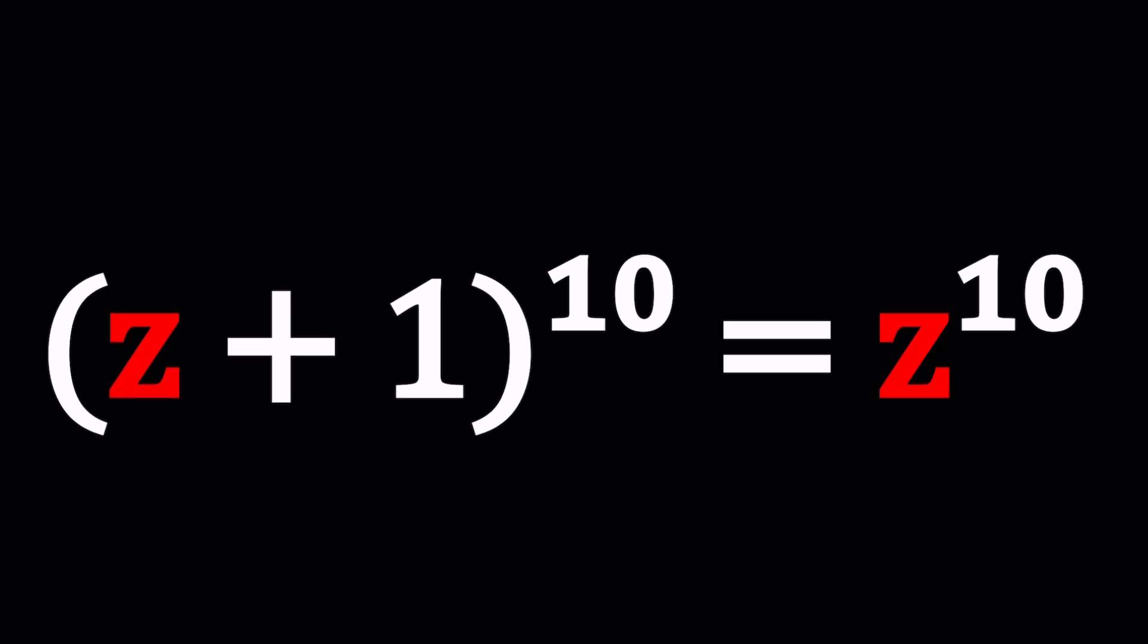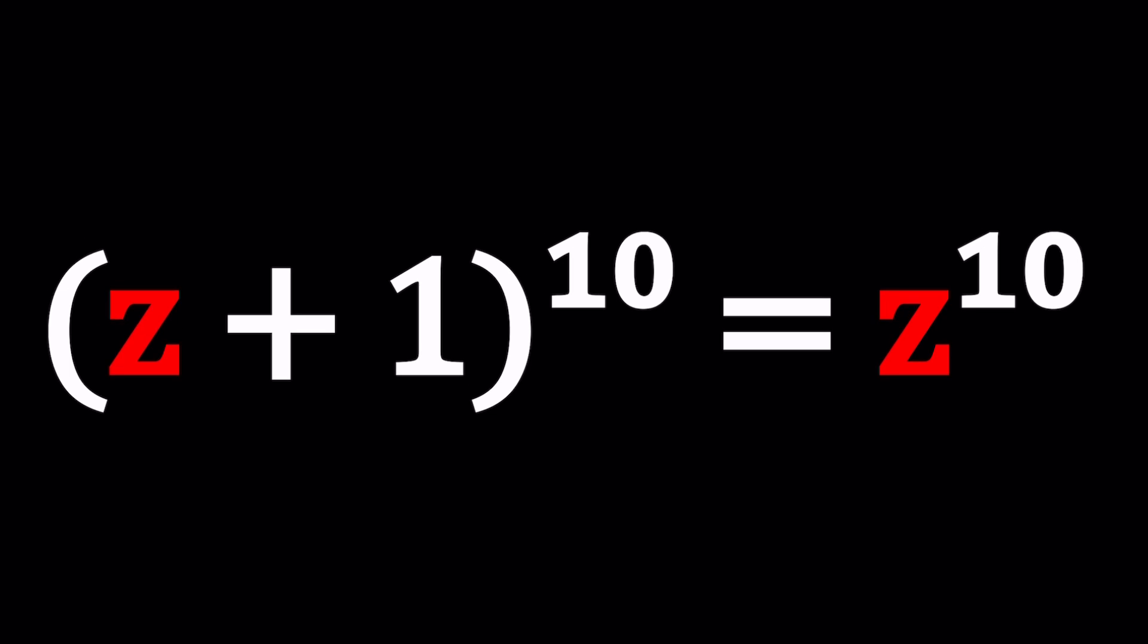So first of all, I want you to think about the real case scenario. How would you solve this problem if you were looking for real solutions only? You would probably just say, okay, if A to the 10th power is equal to B to the 10th, then this implies A equals B, right? Yes, that's partially true because it also implies A equals negative B. When you raise negative B to the 10th power, you get the same thing as B to the 10th power. So we kind of need to consider two cases.